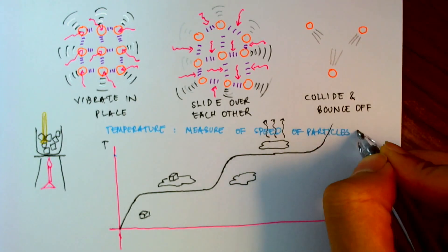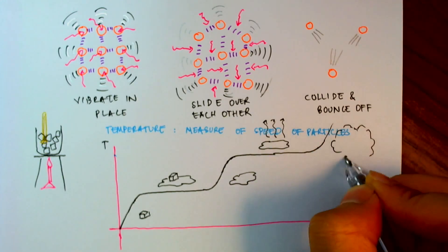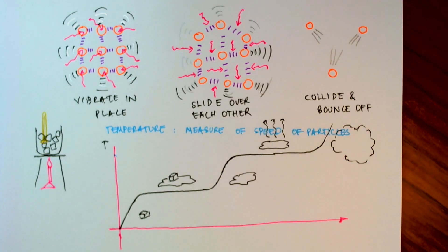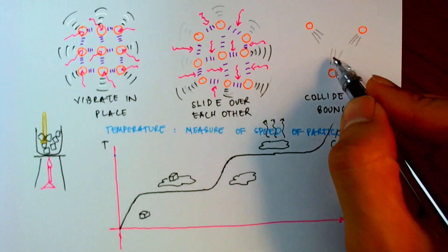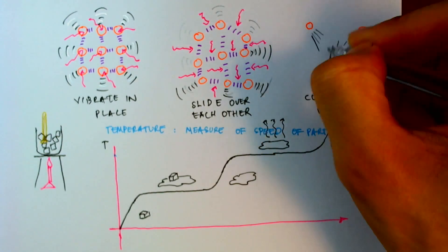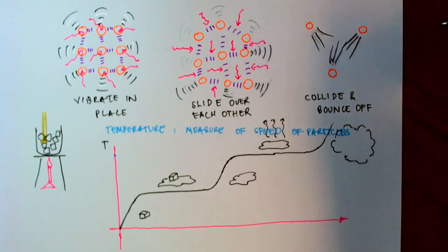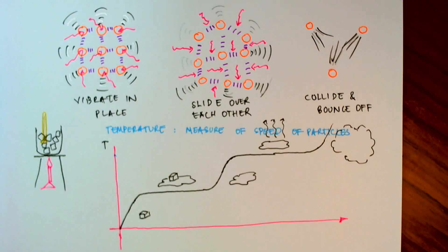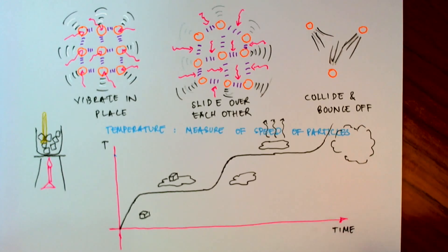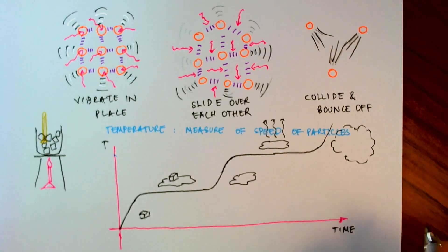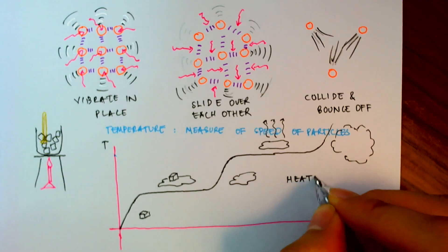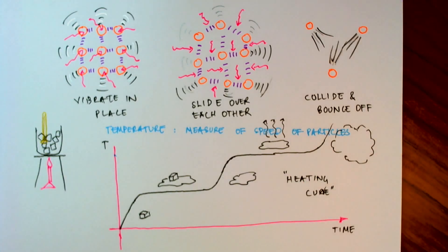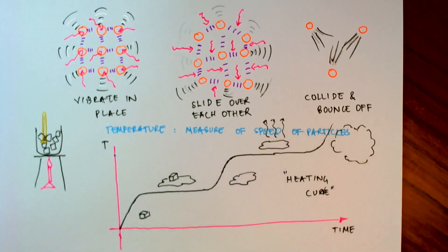And once they've all turned to gas, the temperature of the substance can increase again. Because as you see now, they're moving at really, really high speeds. So higher speed equals higher temperature. I forgot to mention that the x-axis on here is the time axis. And what we've drawn here is what sometimes you might see called a heating curve. It's the behavior of the change in temperature as the object changes its state from solid to liquid to gas.